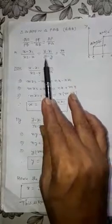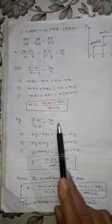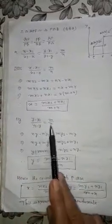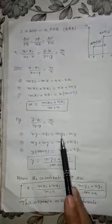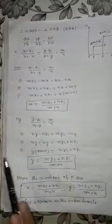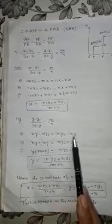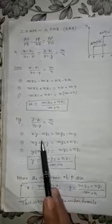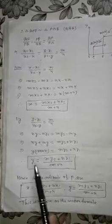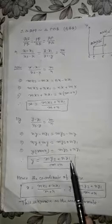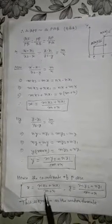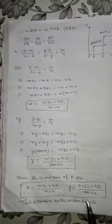Similarly, (y minus y1) / (y2 minus y) equals M/N. Cross multiplying: Ny minus Ny1 equals My2 minus My. Rearranging: Ny plus My equals My2 plus Ny1, so y(M plus N) equals My2 plus Ny1. Therefore y equals (My2 plus Ny1) / (M plus N). Hence the coordinate of P is ((Mx2 plus Nx1)/(M plus N), (My2 plus Ny1)/(M plus N)). This is known as the Section Formula.